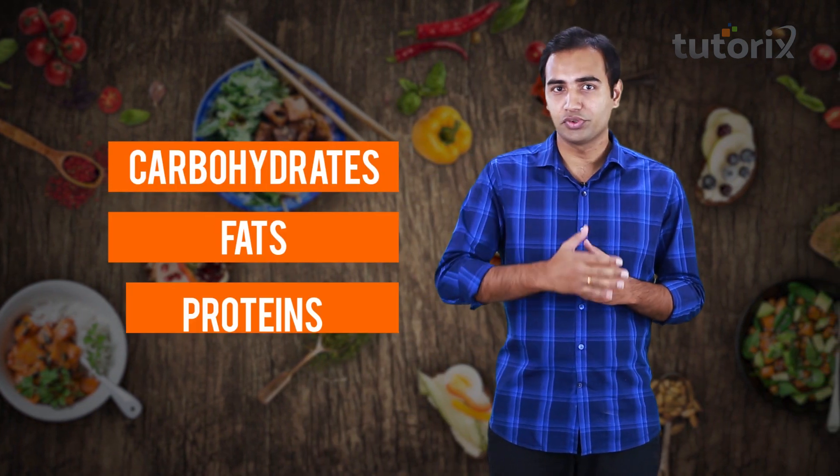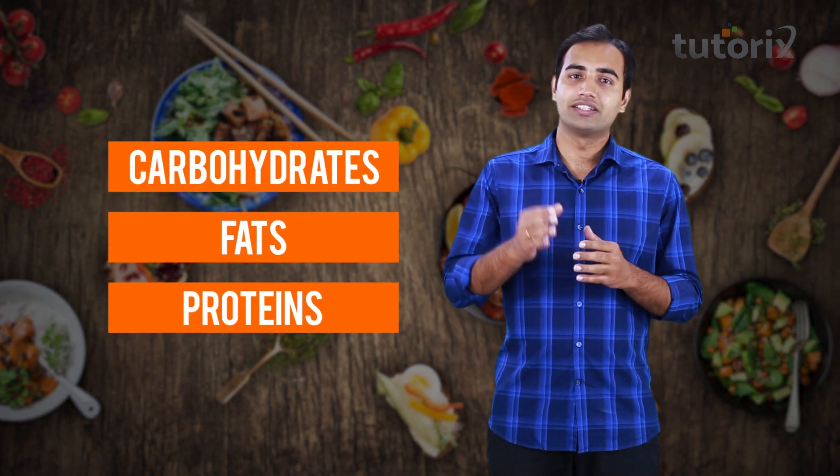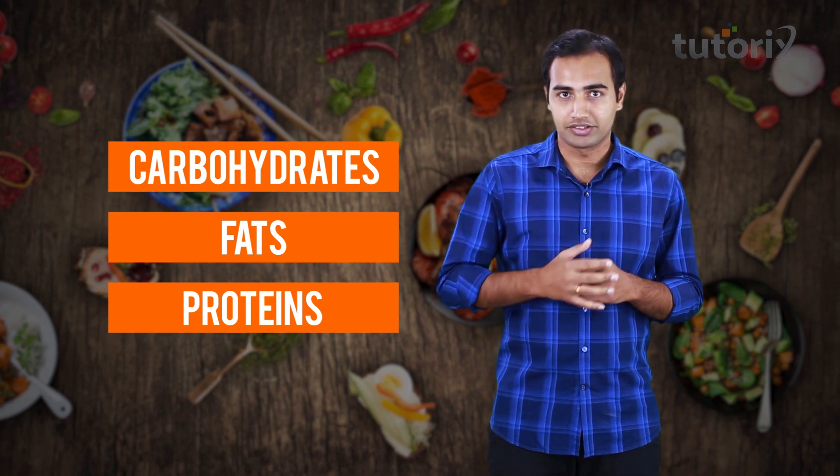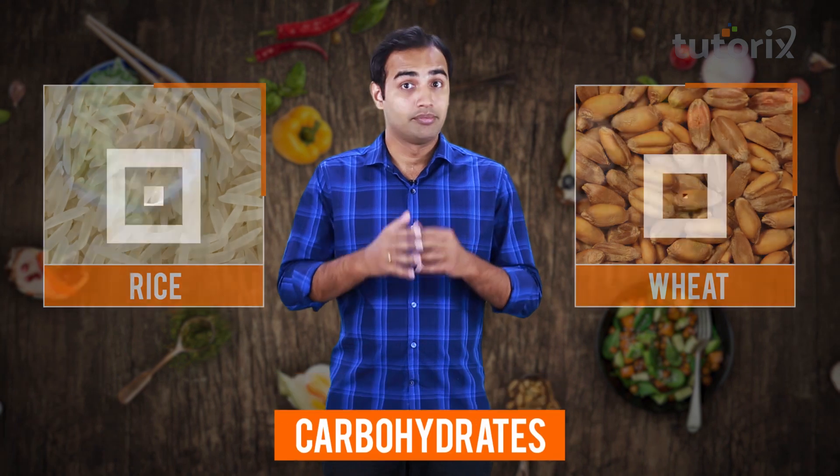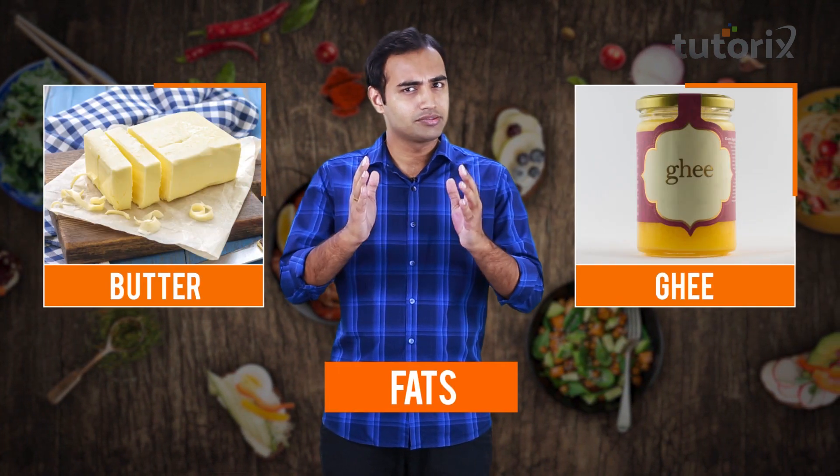In the previous videos we already talked about some essential nutrients which were carbohydrates, fats and proteins. We also saw various food items that contain these nutrients in abundance. For instance, rice and wheat are rich in carbohydrates, milk and egg are rich sources of proteins, while butter and ghee contain large amounts of fats. But is there a way we can know for sure that these food items contain these nutrients? There are some chemical tests which can tell us which food item contains which of these nutrients, and that's what we are going to do today.